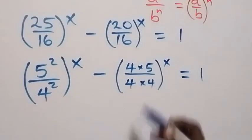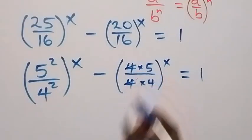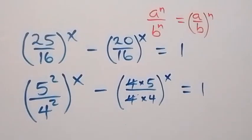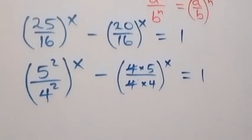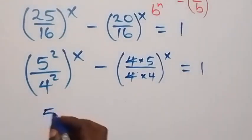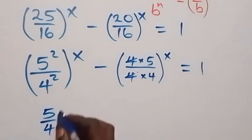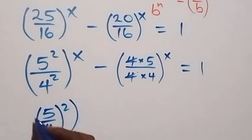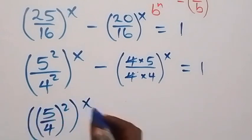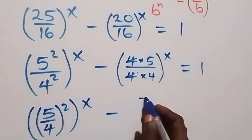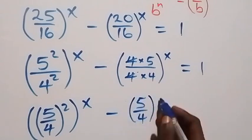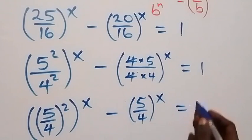Then here, the 4 cancels out. Also applying the law of indices, the power of 2 we can take out, and this becomes (5/4) all squared, then all raised to power x, minus (5/4) all raised to power x, now equals 1.